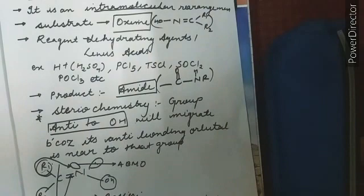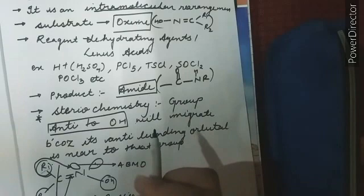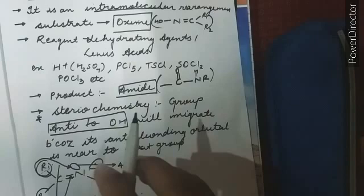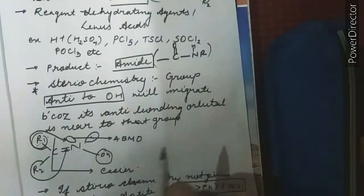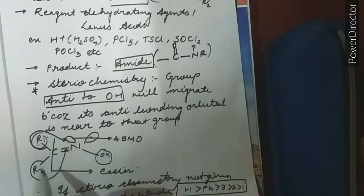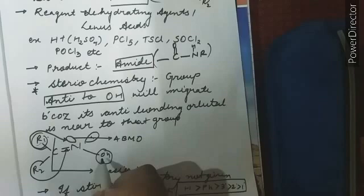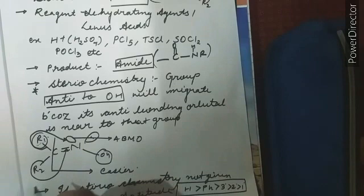Now very important thing about this reaction is its stereochemistry. The group anti to OH will migrate because its anti-bonding orbital is near to that group. You might not get it what I am telling you now, but when we will do the mechanism, we will make it clear. First of all, a simple nomenclature. See this, this is a stereocenter. It can show geometrical isomerism. The group opposite to OH is anti to OH and the group on the same side of OH is syn to OH.